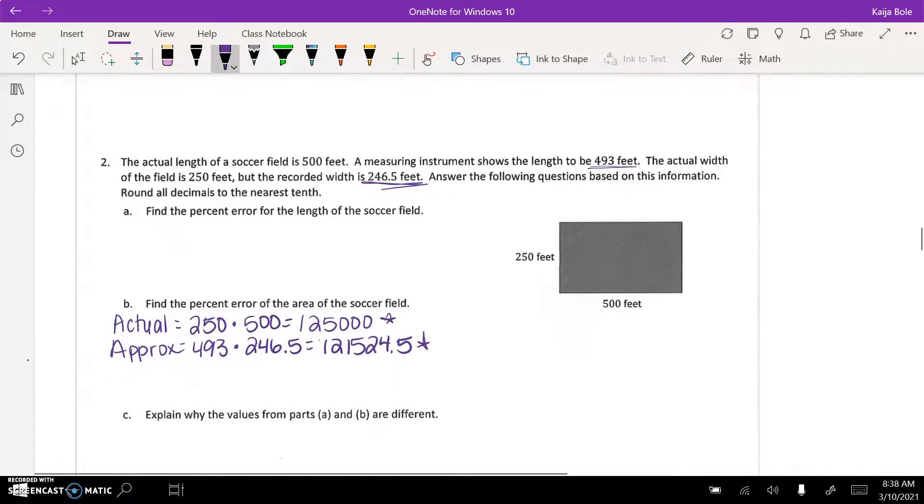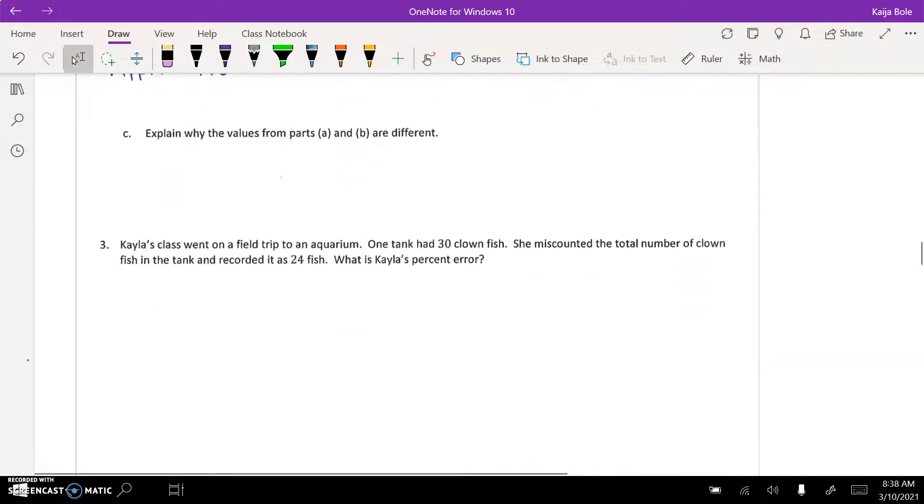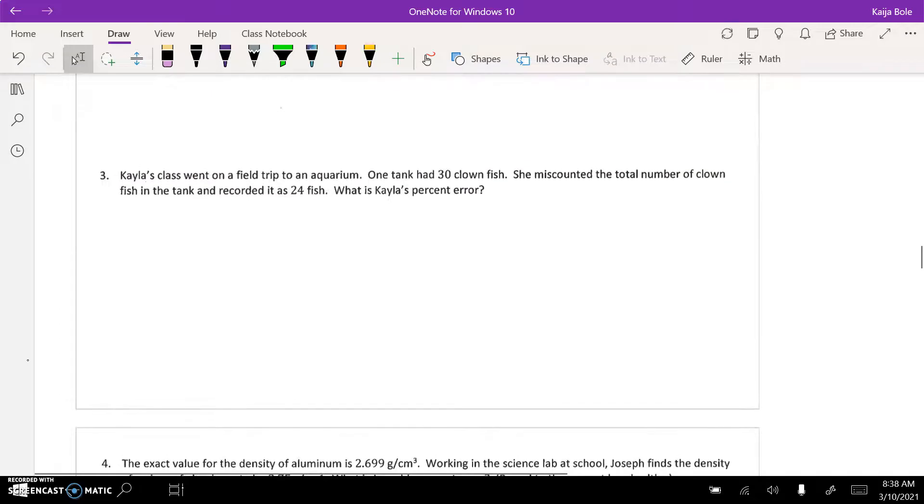And then number three, similar question about percent error. Sometimes this gets a little tricky. It says Kayla's class went on a field trip to an aquarium, one tank had 30 clownfish, she miscounted the total number of clownfish in the tank and recorded it as 24. So this is the actual, there's actually 30 fish in the tank, but she miscounted it, so this would be your approximate. Sometimes that gets a little tricky.